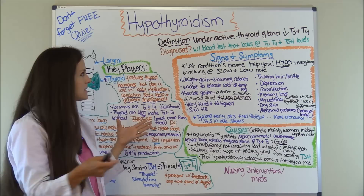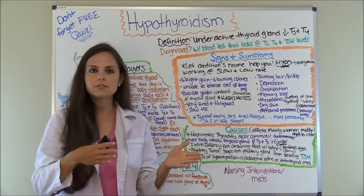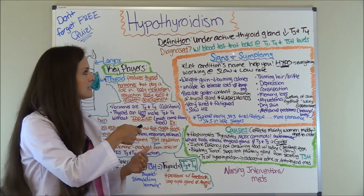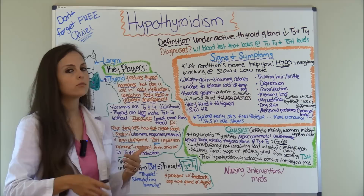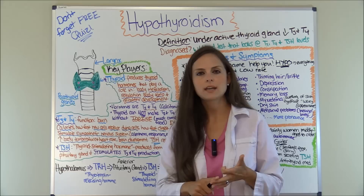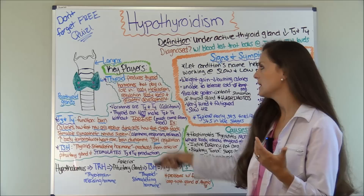First, let's define what hypothyroidism is. Plain and simple, it is an underactive thyroid gland that isn't producing enough T3 and T4, which are thyroid hormones that keep our body working efficiently. It's diagnosed when a physician orders a blood test looking at T3, T4, and TSH levels — thyroid stimulating hormone. But first let's cover the pathophysiology, because in order to understand the signs and symptoms, causes, and medications, we need to understand what's going on in the body normally.